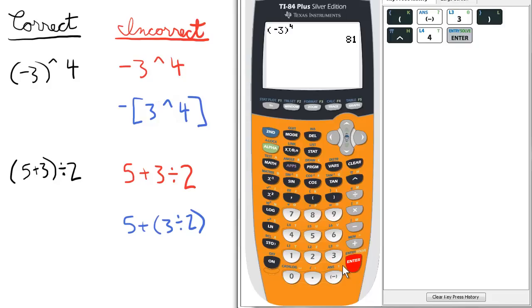If you do not use parentheses, this is how you will get it wrong. Negative 3 raised to the fourth. See, the calculator understands it to be this blue expression. The opposite of 3 raised to the fourth. So, you want to enclose the negative 3 in parentheses.